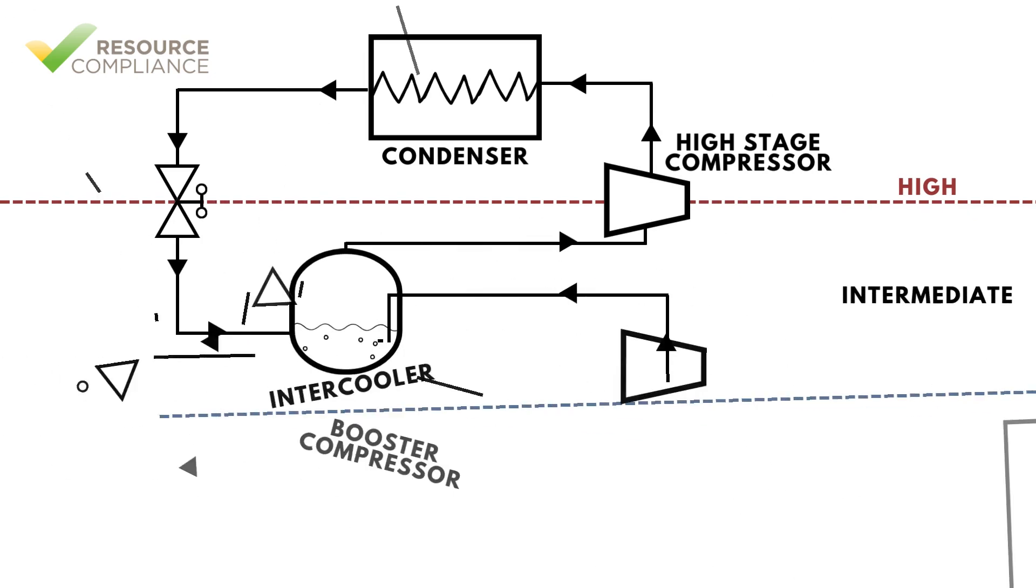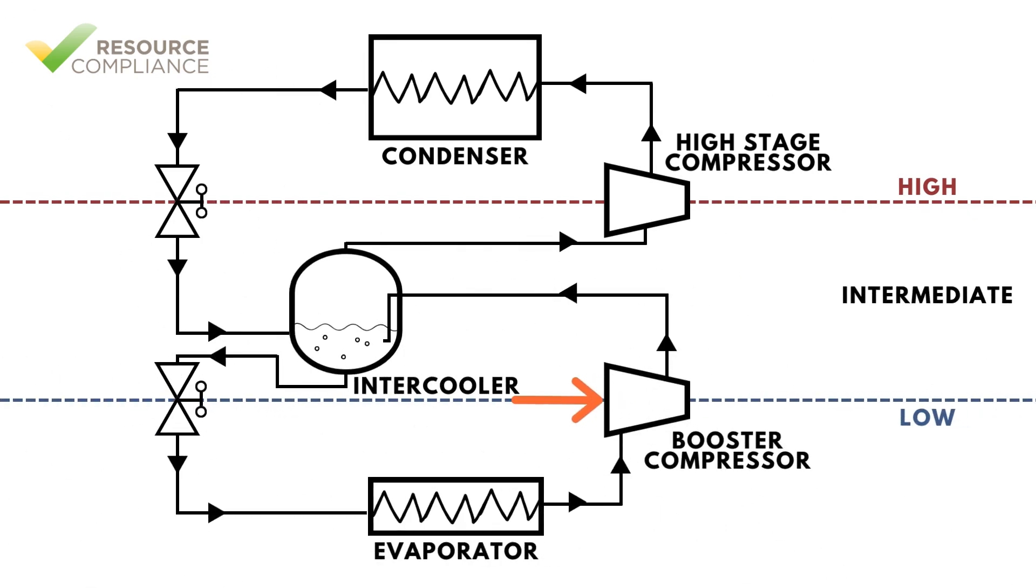The first stage compressor is called the booster compressor. Vapor from the evaporator is drawn into the booster compressor, where it is compressed to an intermediate pressure between the evaporator and condensing pressure.